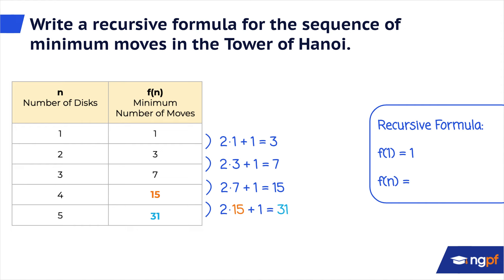Now, I want to generalize that pattern into a formula. I know the general pattern is 2 times the term before plus 1. To write that as a formula, I need a way to represent the term before. We can use f of n minus 1 to represent the term before. That gives us the second part of our recursive formula. f of n equals 2 times f of n minus 1 plus 1.